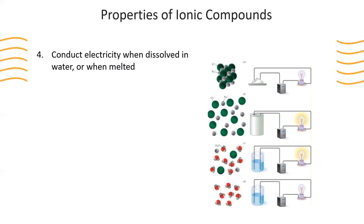Most ionic compounds that are dissolved in water or melted can conduct electricity. In this first image, we see a solid ionic compound of sodium chloride, which does not conduct electricity when tested. The second image of melted salt, where the sodium and chloride ions are flowing more freely, allows electricity to be conducted to light the light bulb when placed in this apparatus. The third image is of salt dissolved in water — the positive ions of sodium and the negative ions of chlorine are flowing freely, allowing electricity to be conducted and the light bulb is lit.